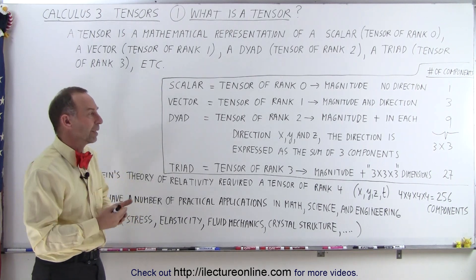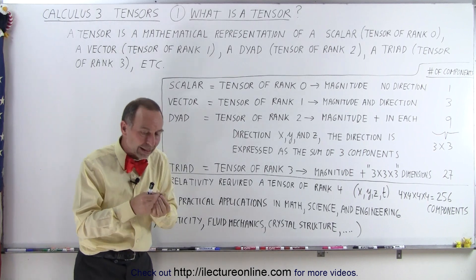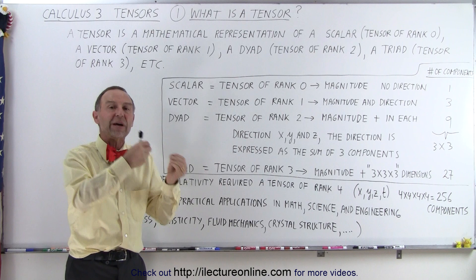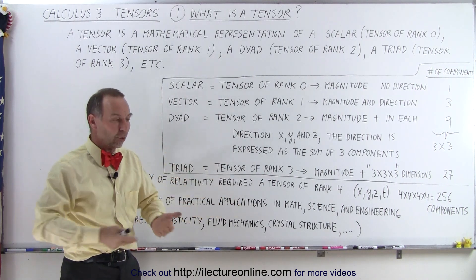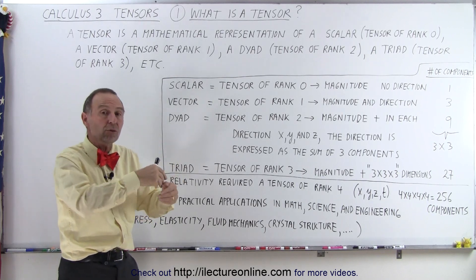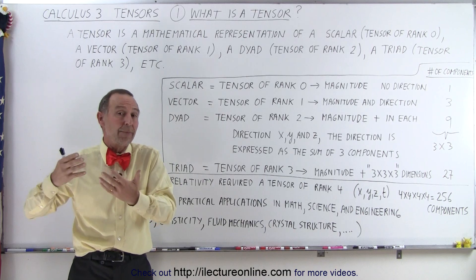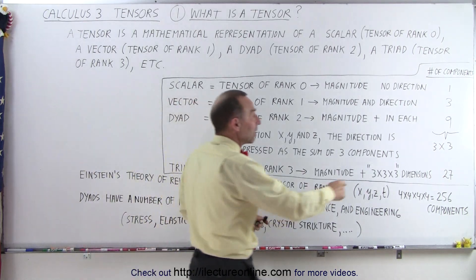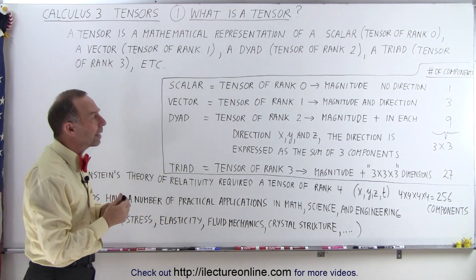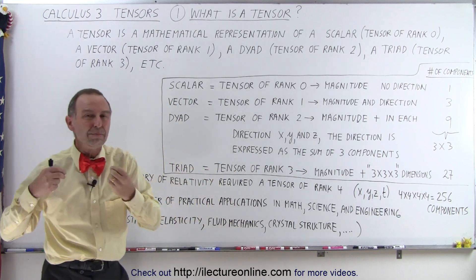So what is a tensor of rank 2? It's called a dyad, and most of us are not familiar with what a dyad is. A dyad is able to describe a physical entity where in each direction — x, y, and z — we need to describe what happens there in terms of a vector with three components. In the x direction we describe what happens with a vector of three components, likewise in y and z. So 3 times 3 means we have nine components required to describe a dyad — a tensor of rank 2.